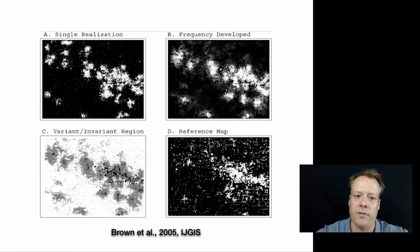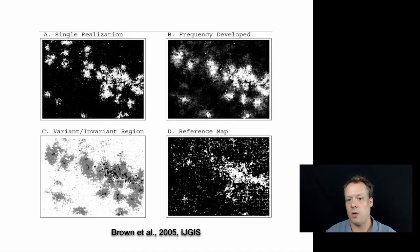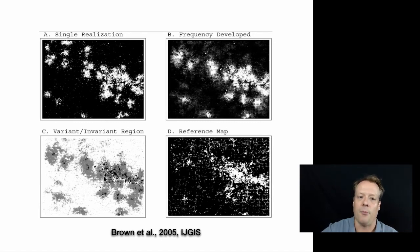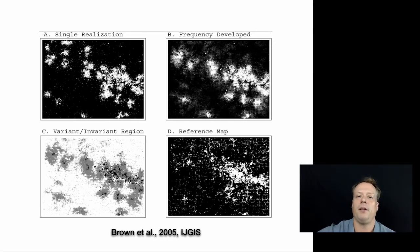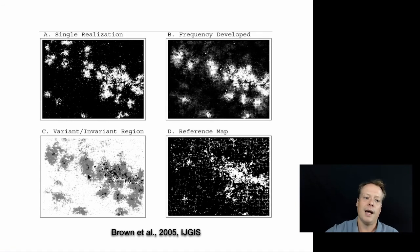We also classified results into variant and invariant regions. If in less than 10% of runs an area was never developed, we called it invariant; if in greater than 90% of runs it was always developed, we also called it invariant. The dark black spots are invariant undeveloped regions, white spots are invariant developed regions, and gray spots are the variant regions where the model predicts possible differences. This was then compared to a reference map. Variant regions mean that small incentives one way or another could affect the results.